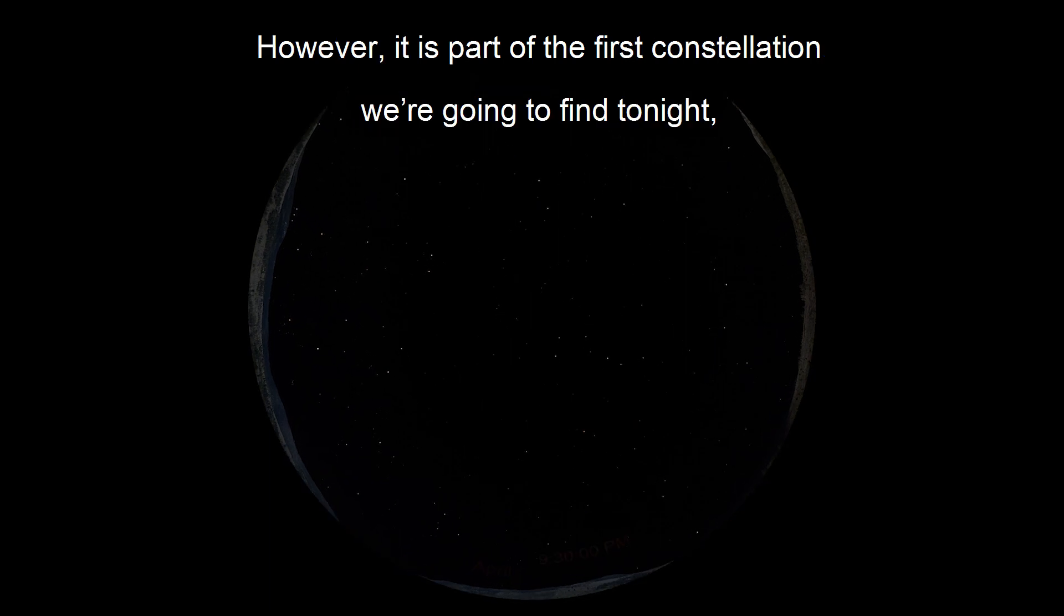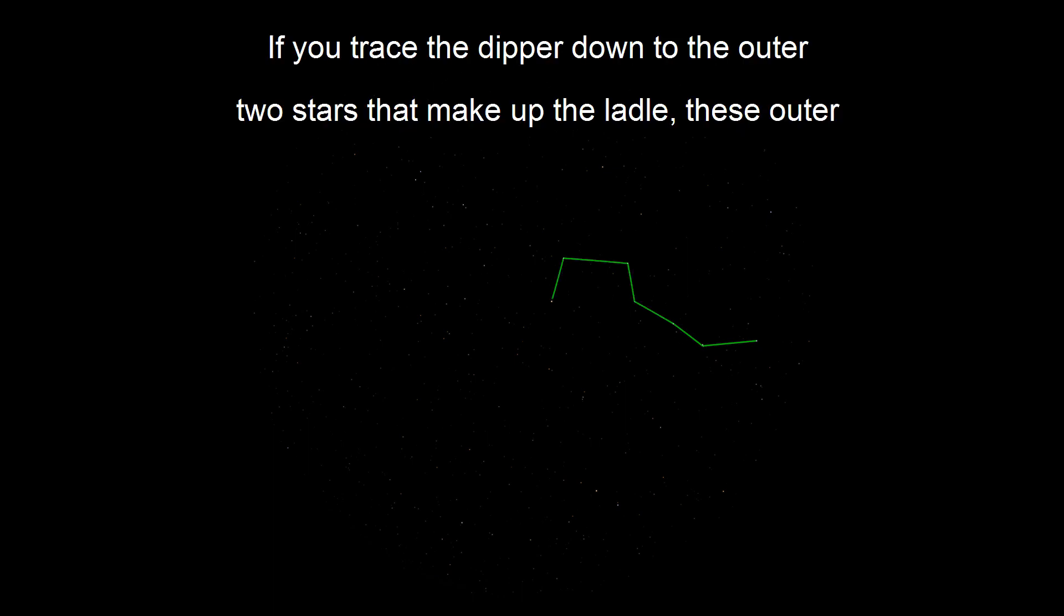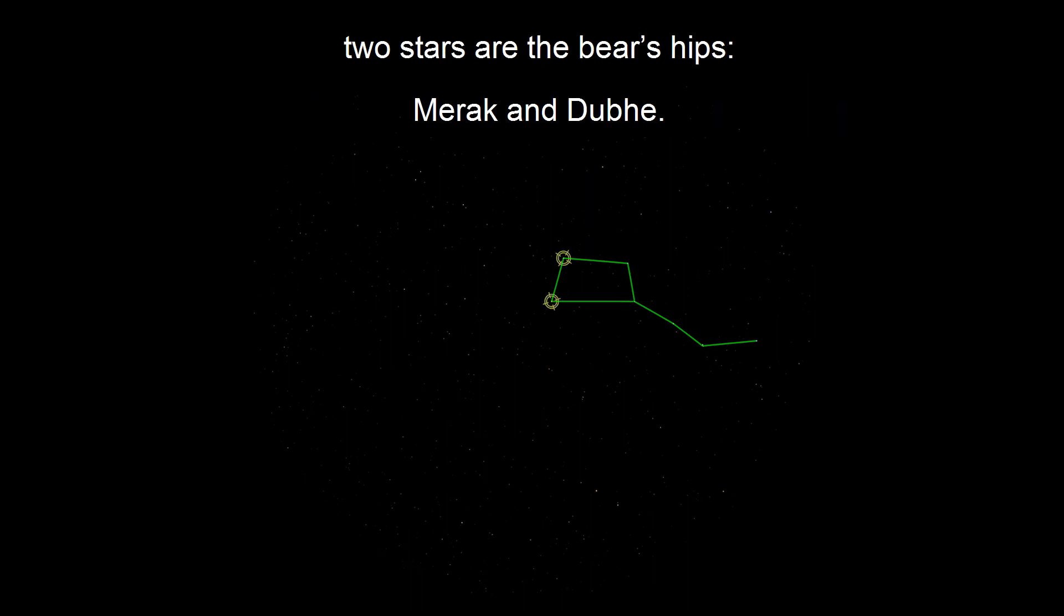However, it is part of the first constellation we're going to find tonight, Ursa Major, the Big Bear. The handle of the Big Dipper is the bear's tail. If you trace the Dipper down to the outer two stars to make up the ladle, these outer two stars are the bear's hips, Merak and Dubhe.